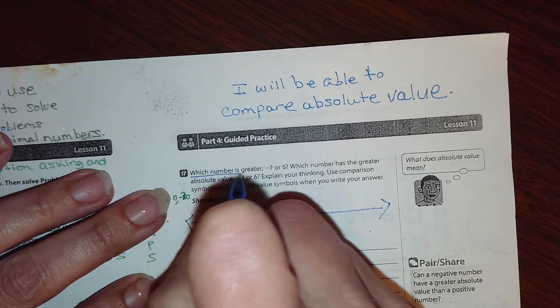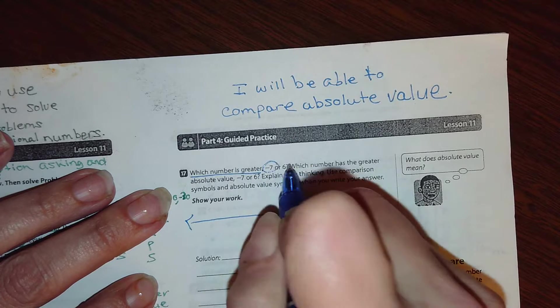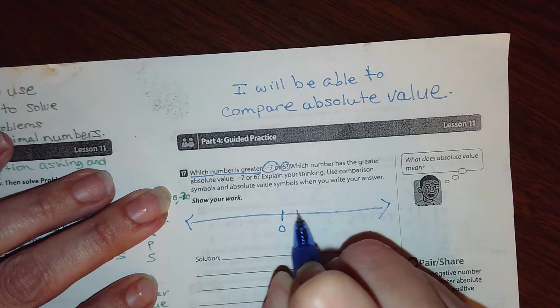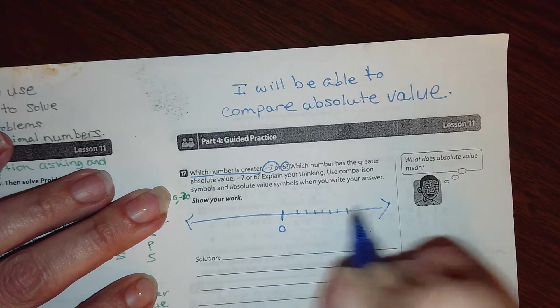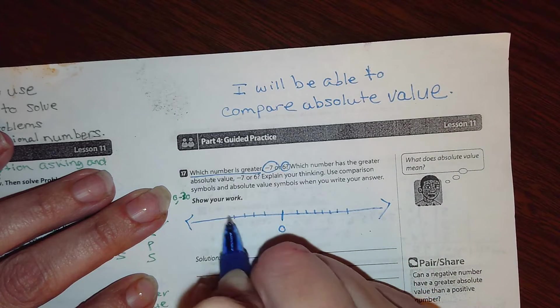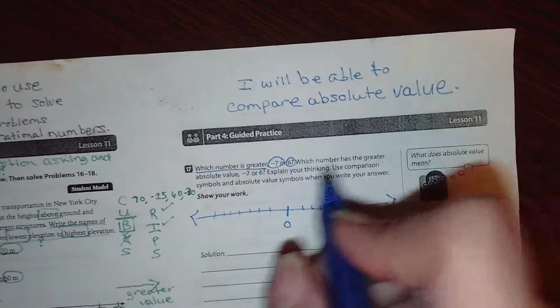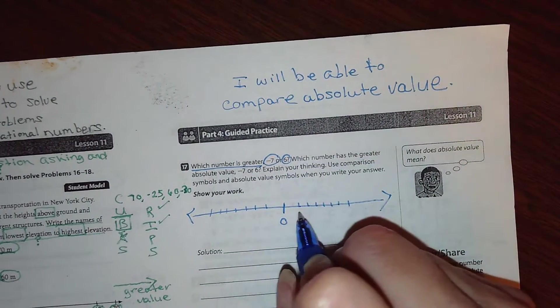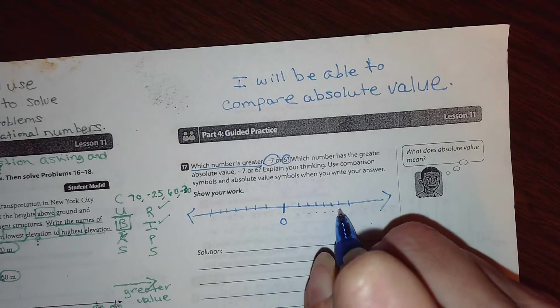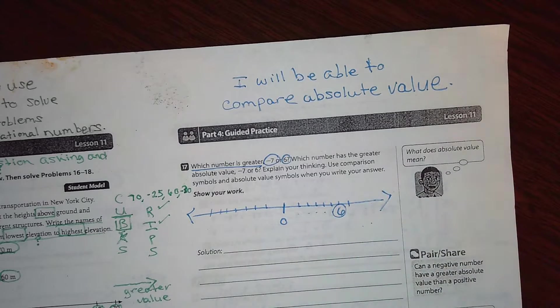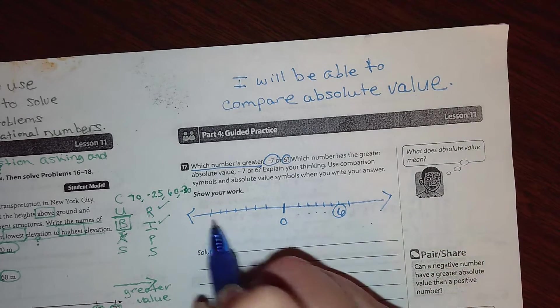I'm going to start with which number is greater, negative seven, or six, right? Now, obviously, sixes, right?